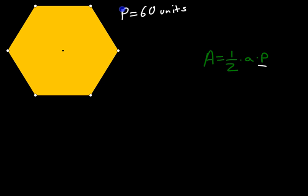Now remember, the apothem of a regular polygon is from the center point to the midpoint of one of the opposite sides.